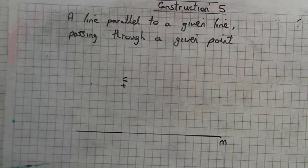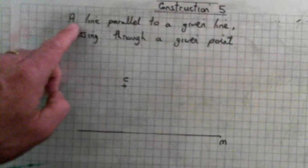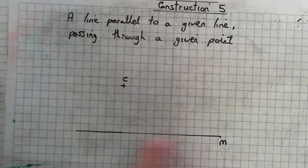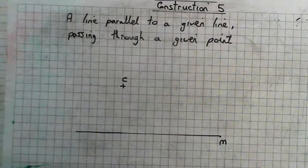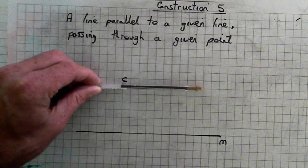Are you looking up construction? It's construction five. We want to draw a line parallel to a given line. So this is our given line. We want to draw a line parallel to that, and it has to go through this point. We're given this point C.